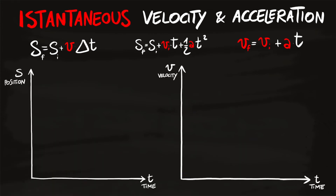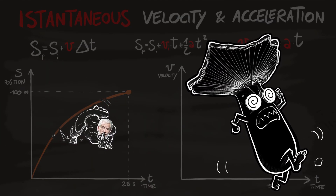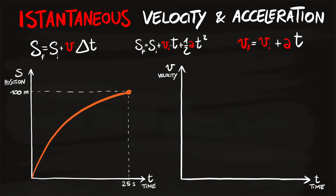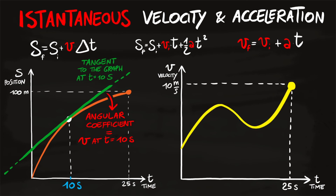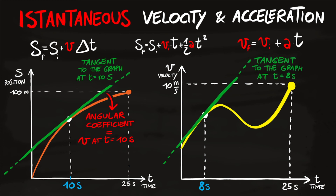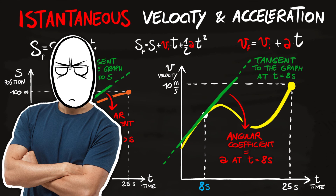If derivatives aren't your thing, here's a second method using graphs — either a position-time graph or a velocity-time graph. On a position-time graph describing grandpa's motion, to find his instantaneous velocity at, say, t = 10 seconds, locate that point on the graph and draw the tangent line — a line that only touches the graph at that point. The slope of this tangent line is the instantaneous velocity. The more inclined the line, the faster grandpa was running. The same approach works on a velocity-time graph to find instantaneous acceleration.